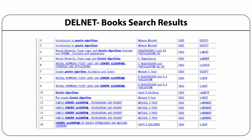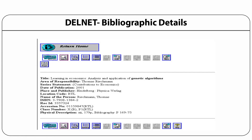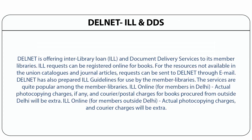This slide shows the result of the DELNET database of books, giving the location of books available in the last column. Books available with member libraries can be searched through DELNET, and one search displays what books are available in which library. You can choose from the available libraries and see what books are available where. The bibliographical details of particular books and their availability in libraries can also be viewed through this website.